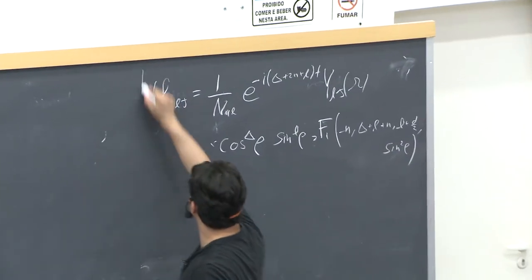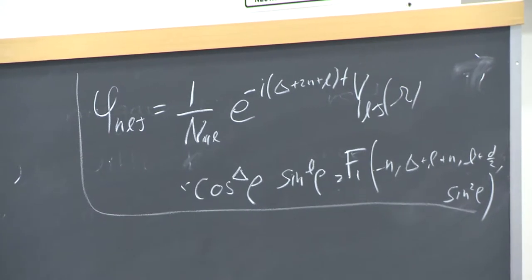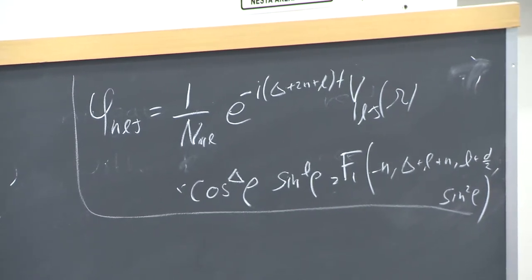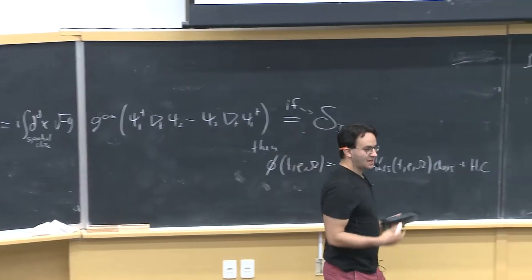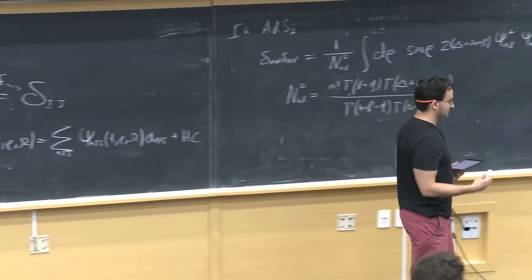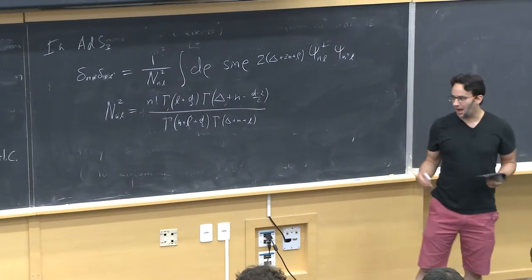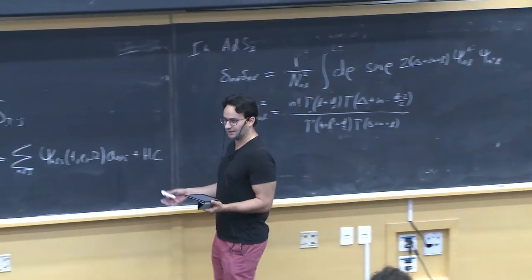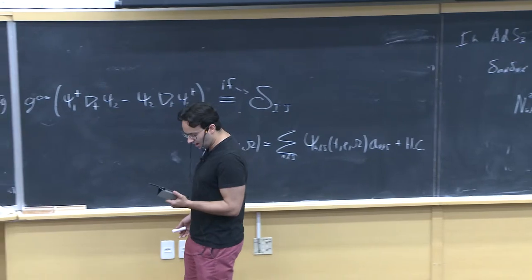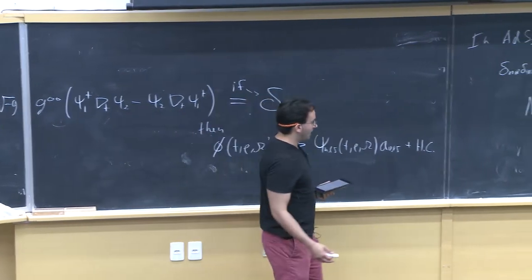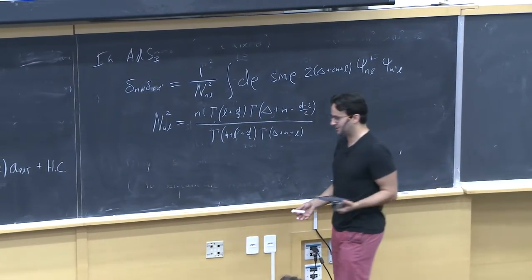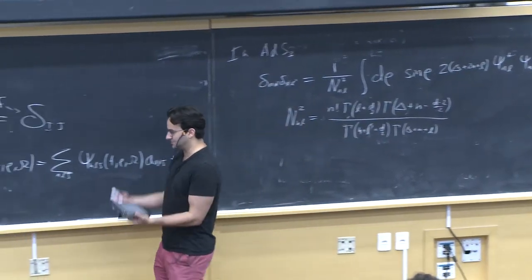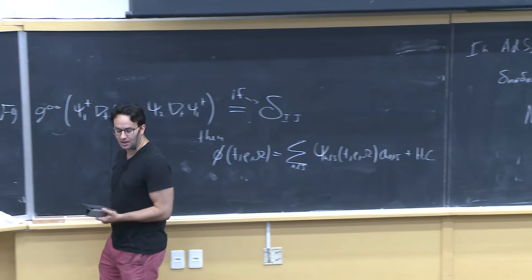Now we have a quantum field theory with any number of free particles living in AdS. All its states transform nicely under representations of the conformal group. So we can ask: does this correspond to something like a conformal field theory? In particular, can we rewrite this quantum system as a statement about local operators, an operator product expansion, and all of the states obtained by acting with local operators via an operator-state correspondence on the vacuum?